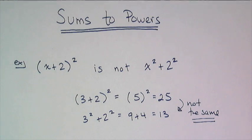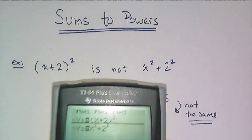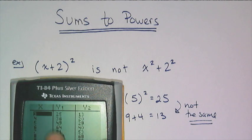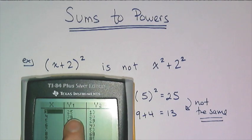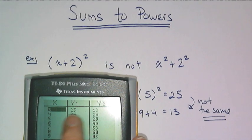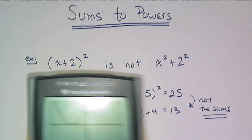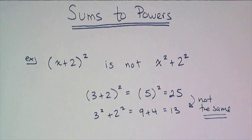I can double check this with my calculator. If these expressions are the same, then when I go to the table I'll get the exact same table, and I don't. At 3 I get 25 and 13 - those aren't the same expression. If I graph them I see that they're not the same graph. This one was shifted to the left, this one was shifted up.